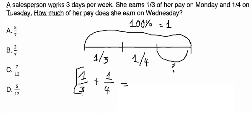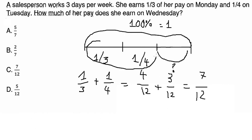This one we need to multiply by four, and this one by three on the numerator and denominator. So we have four over twelve plus three over twelve. So we have seven over twelve.